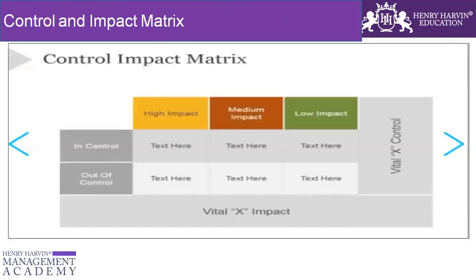There's another tool called the control and impact matrix. So there are two tools available and we can use either one of them. This is the control impact matrix — it adds another angle, which is 'in control' and 'out of control,' in addition to the high, medium, and low categorization. I will categorize all my causes into: high impact in control, medium impact in control, low impact in control — and similarly, high impact out of control, medium impact out of control, and low impact out of control. By looking at this diagram, which of these six boxes do you think I'll be focusing on?